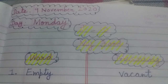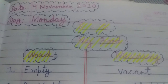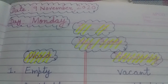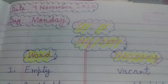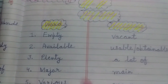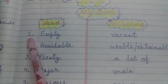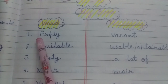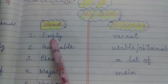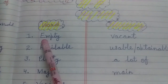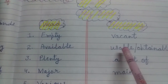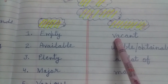Watch the video carefully and listen to me. Firstly, we will discuss word meanings of this chapter. Let's read our first word. Our first word is E-M-P-T-Y — empty. First word: empty, meaning vacant.